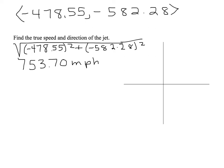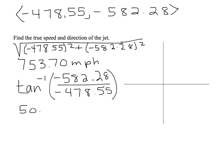Then we start to find the true direction of the jet by finding the inverse tangent of my vertical component, negative 582.28, divided by my horizontal component, negative 478.55, and the inverse tangent of that is 50.58 degrees.